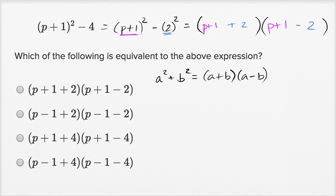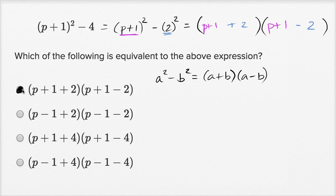Once again, this is just a difference of squares. I encourage you to search for difference of squares on Khan Academy if this is looking completely foreign to you. This is kind of an interesting variation on it. And we can see which answer choice this matches: p plus one plus two times p plus one minus two — that one right there.